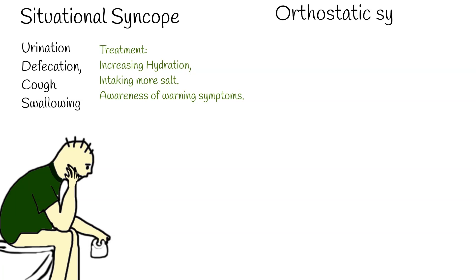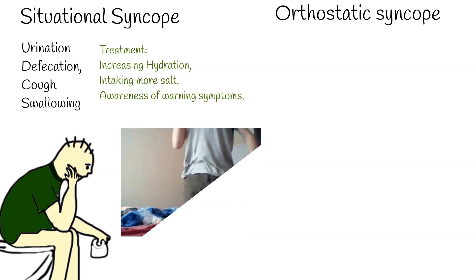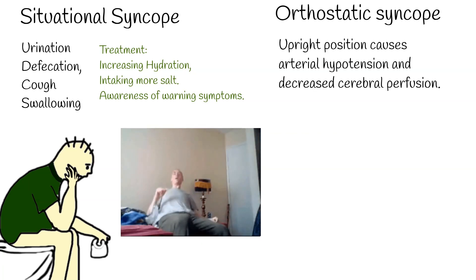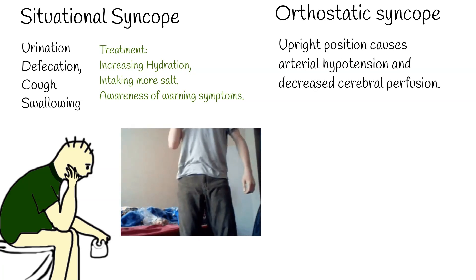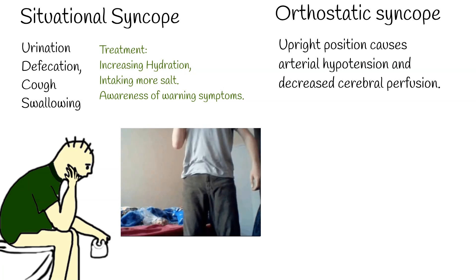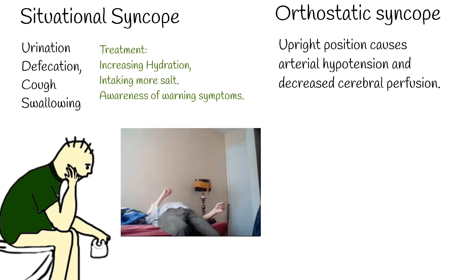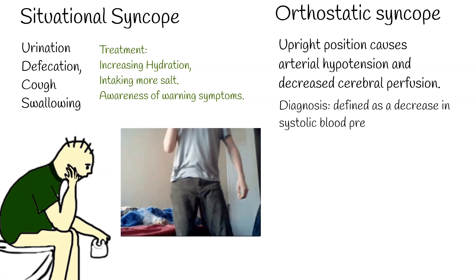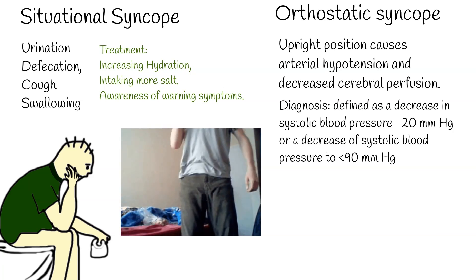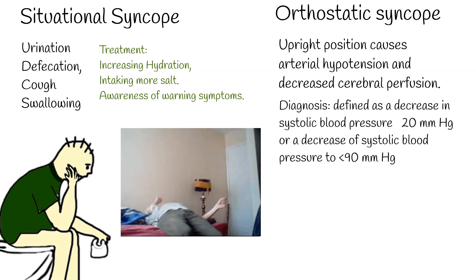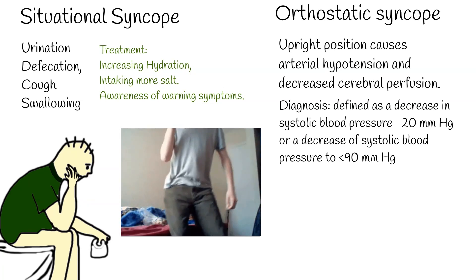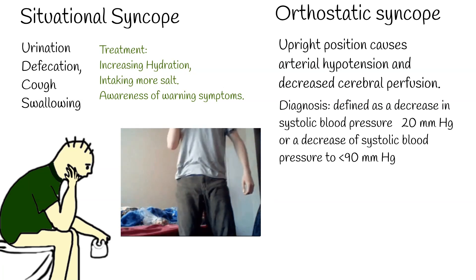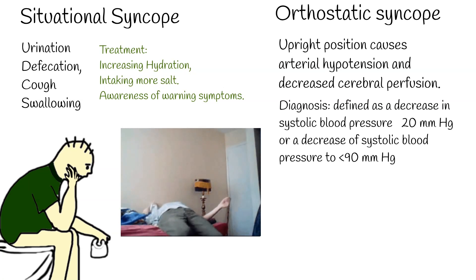Another common cause of syncope is orthostatic syncope. It is syncope in which the upright position causes arterial hypotension and decreased cerebral perfusion. It happens when a person changes position from sitting or lying to an upright position, and is more common among the elderly. Orthostatic syncope is diagnosed when there is documentation of orthostatic hypotension, defined as a decrease in systolic blood pressure of 20 mmHg or a decrease to less than 90 mmHg, associated with syncope or presyncope.